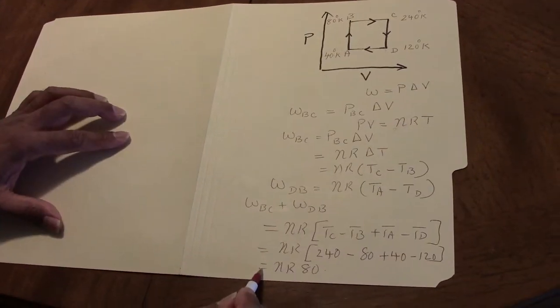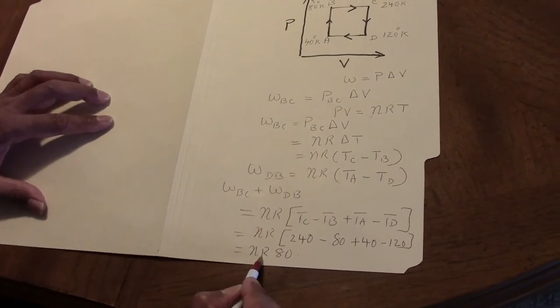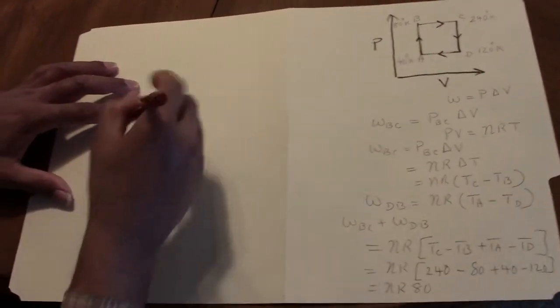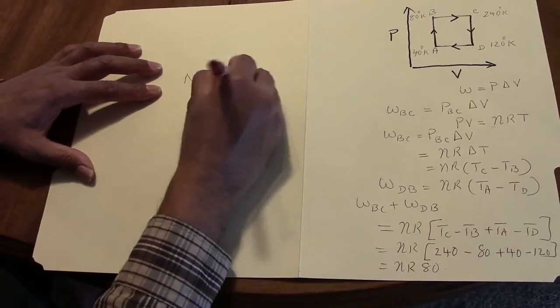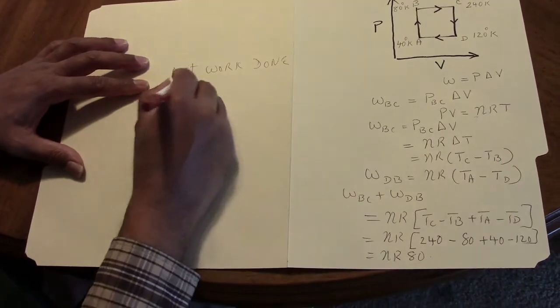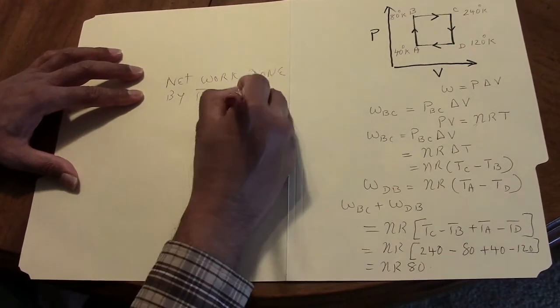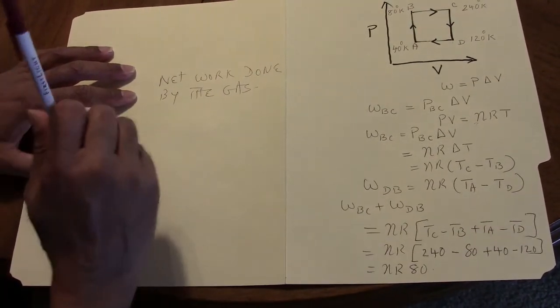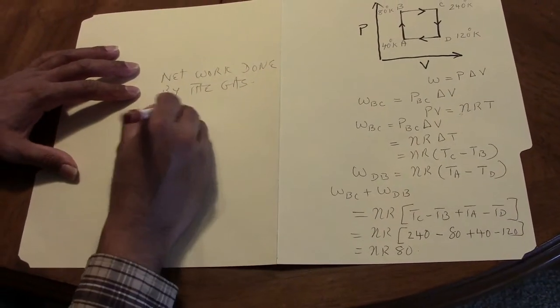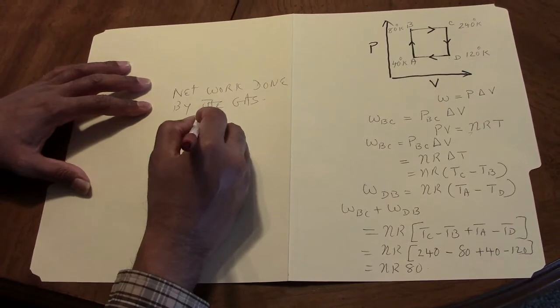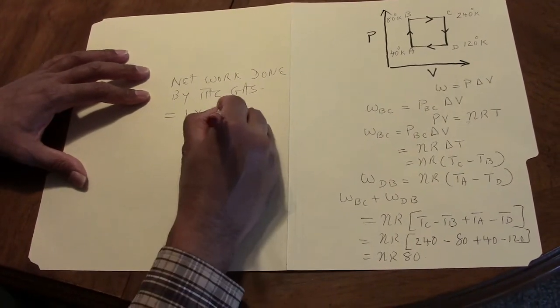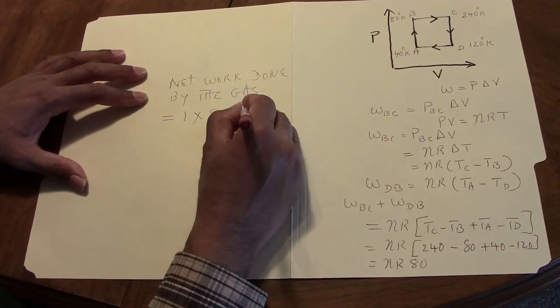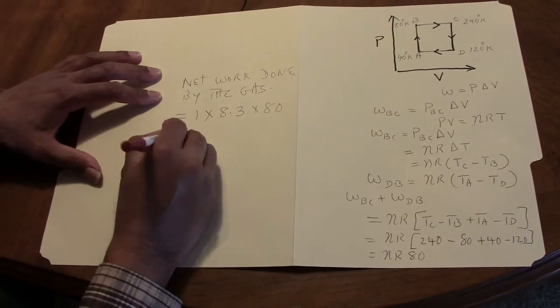Now, where N is the number of moles and R is the gas constant and 80 is what we calculated. So, the net work done by the gas, and let's assume for the sake of this problem that we have one mole of the gas so that N would be one.